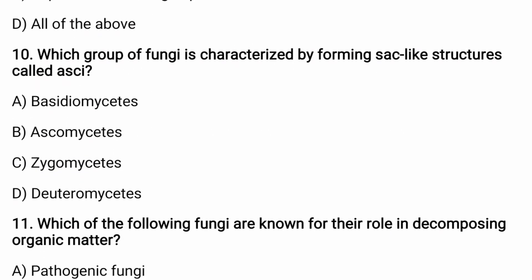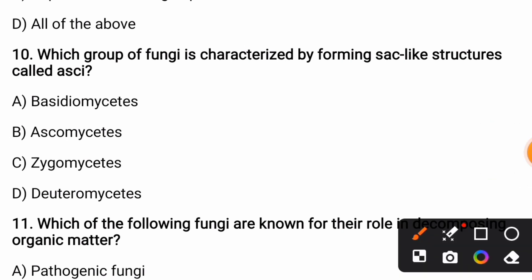Which group of fungi is characterized by forming sac-like structures? Options are: Basidiomycetes, Ascomycetes, Zygomycetes, or Deuteromycetes. The correct answer is Ascomycetes, which have a sac-like structure where they produce ascospores.